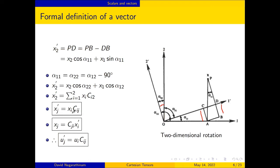In this particular representation, the repeated index is i, and the summation over i going from 1 to 2 is implied. We will use this Einstein summation rule whenever there is a repeated index in the tensor representation. Also, x_j equals C_ji * x_i prime. Similarly, any arbitrary vector u_i can be represented in the newly transformed coordinate system as u_j prime equals u_i * C_ij.